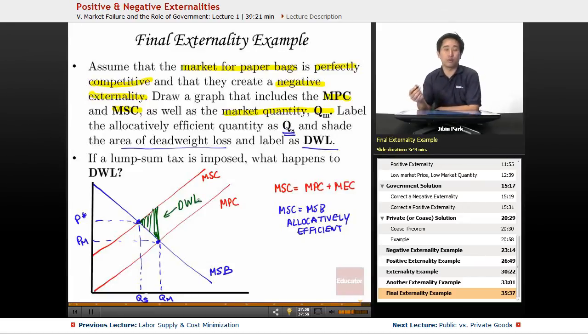Now the final question: if a lump sum tax is imposed. Keep in mind, a lump sum tax is opposed to a per unit tax. A per unit tax does affect the margins, whereas a lump sum tax does not affect the marginal cost. A lump sum tax does not affect production.